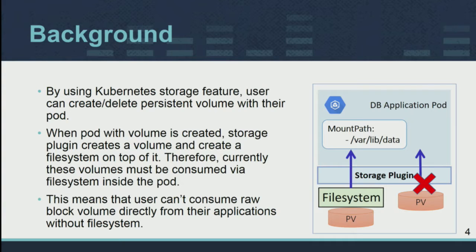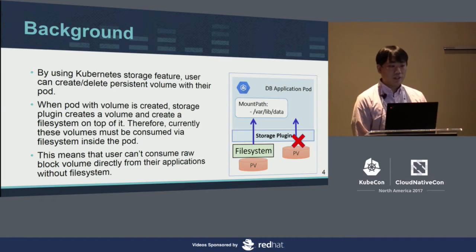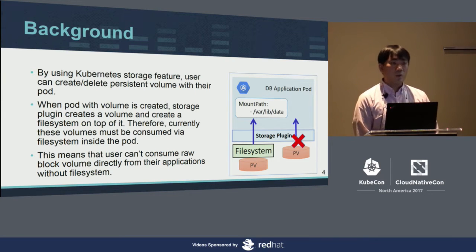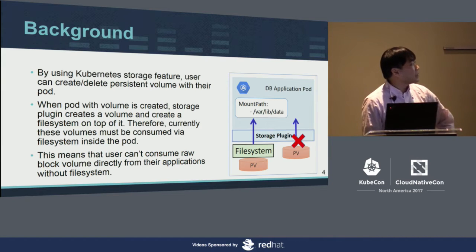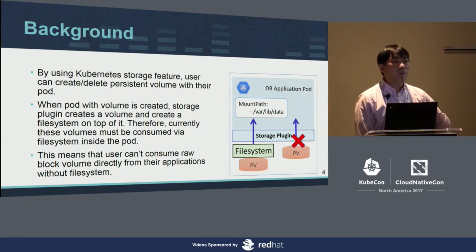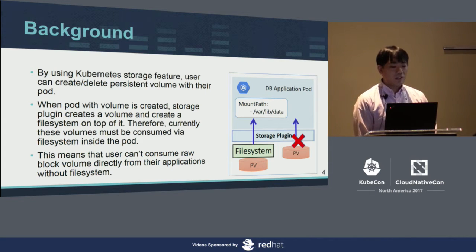Let me explain the background of this feature. By using the Kubernetes storage feature, users can create and delete volumes with their pods. When a pod with a volume is created, the storage plugin creates a volume and creates a file system on top of it. Therefore, currently, this volume must be consumed via a file system inside the pod. As you can see, the application pod accesses a mount path — the data — as a persistent volume. This means users can't consume a raw block volume, such as /dev/sda, directly from their applications without a file system.